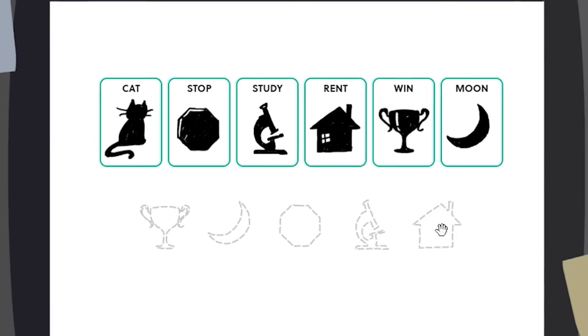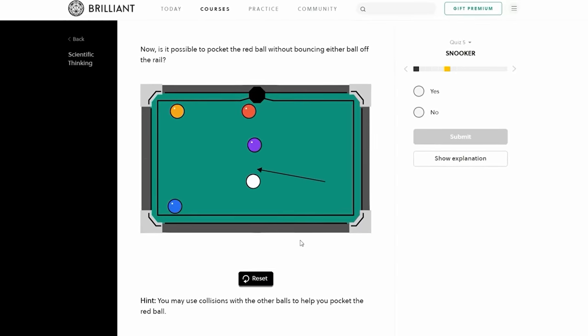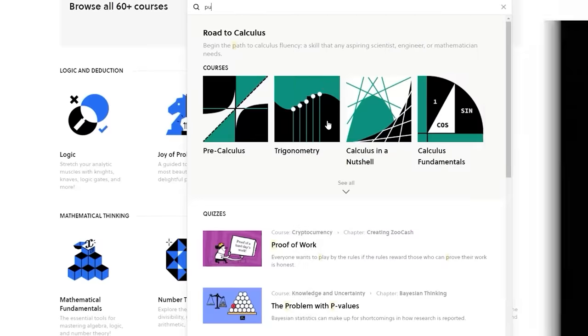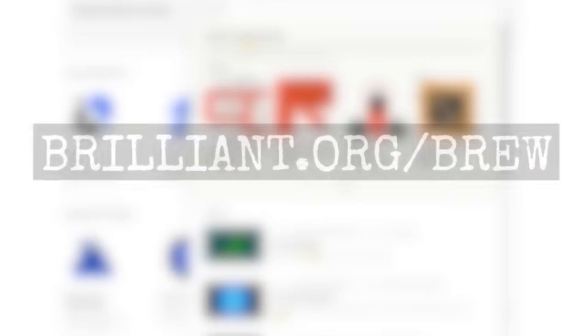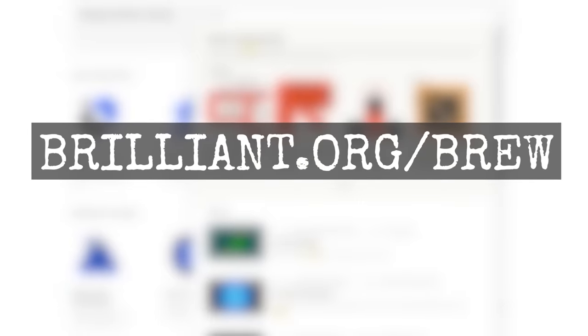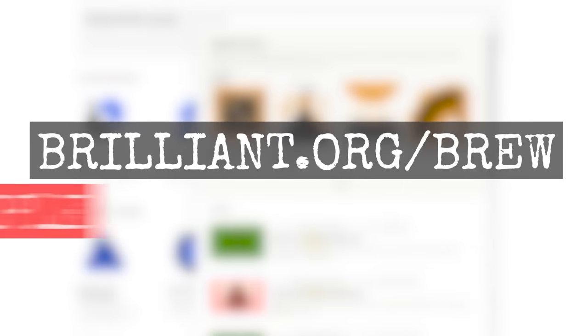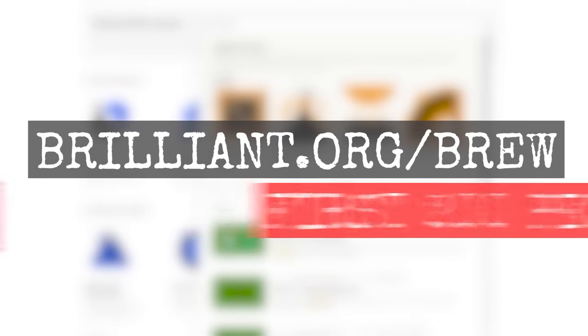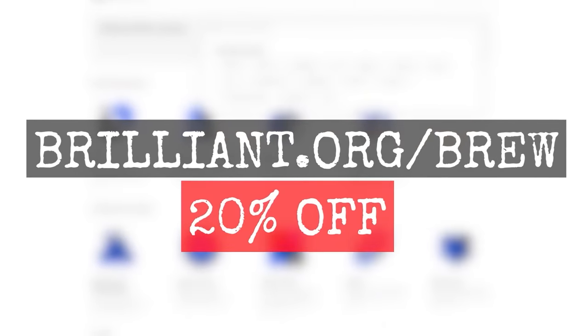Brilliant gives you fun challenges and puzzles that help you develop a framework to tackle anything life throws at you, and improve your critical thinking skills. Go to brilliant.org slash brew to sign up for free, and also the first 200 people will get 20% off their annual premium membership.